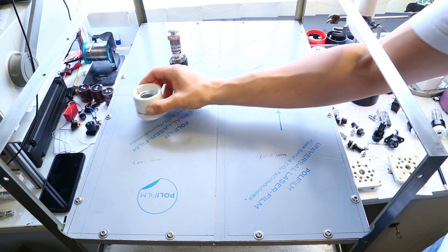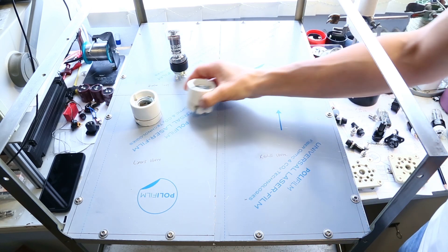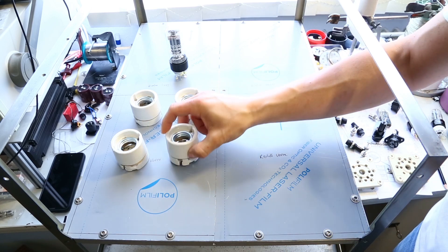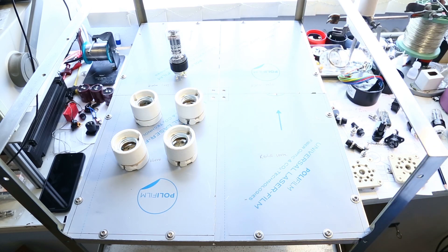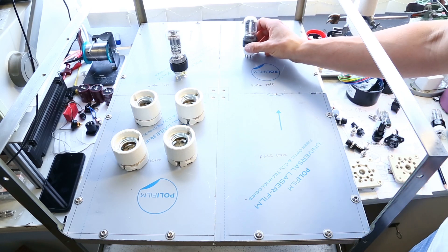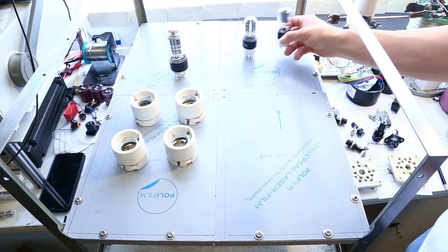There are four DCG41000 mercury vapor rectifying tubes for the 840VDC voltage.